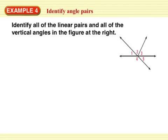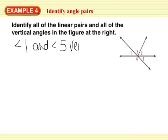First example: identify all the linear pairs and all of the vertical angles in the figure at the right. To find vertical angles, we're going to look for angles formed by intersecting lines. So like this line and this line intersect. I have the angles formed by those intersecting lines. So I have angle 1 and angle 5 are vertical angles.